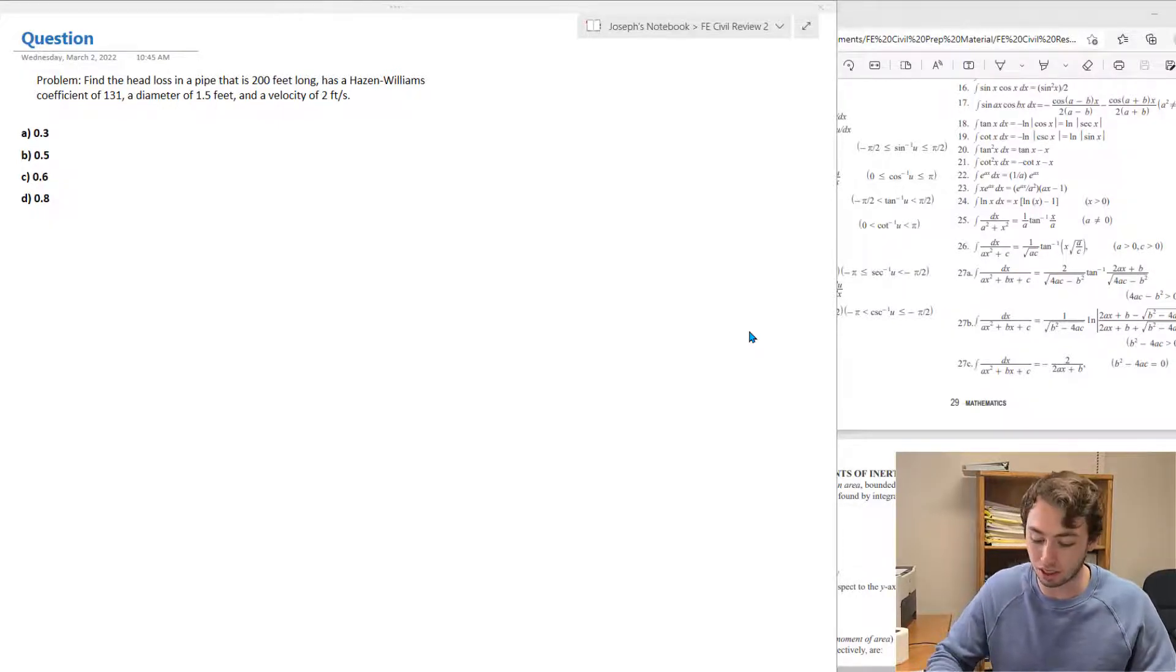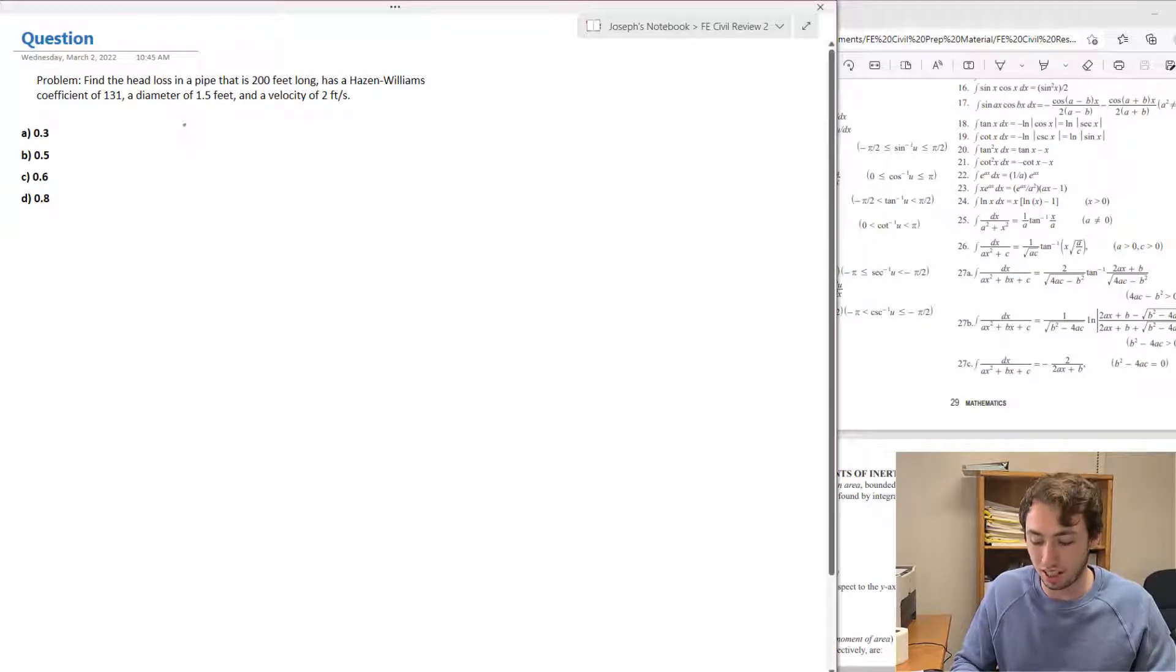So we know what's given here: the length of the pipe was 200 feet, we were given a velocity that was 2 feet per second, we were given a diameter which is 1.5 feet, and then we were given the Hazen-Williams coefficient which is C equals 131.